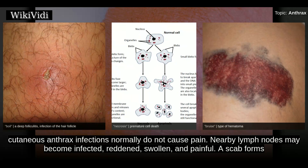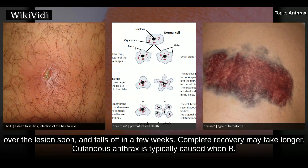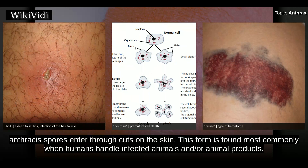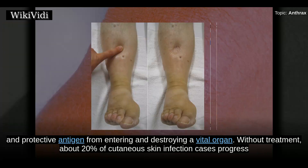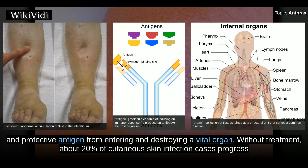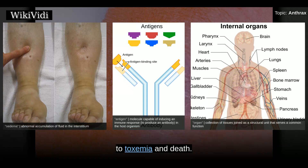Nearby lymph nodes may become infected, reddened, swollen, and painful. A scab forms over the lesion soon and falls off in a few weeks. Cutaneous anthrax is typically caused when B. anthracis spores enter through cuts on the skin, and is found most commonly when humans handle infected animals or animal products. It is rarely fatal if treated, because the infection area is limited to the skin, preventing the lethal factor, edema factor, and protective antigen from entering and destroying a vital organ. Without treatment, about 20% of cutaneous skin infection cases progress to toxemia and death.